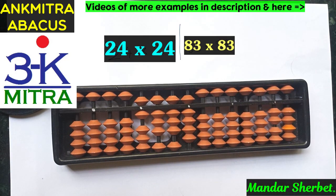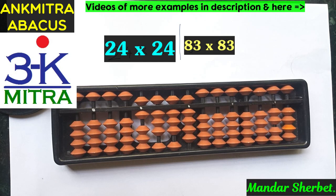With both these examples I hope that the two-digit multiplied by two-digit calculation method on the abacus will be better understood by everyone. I have created more examples and more videos of this method, and I will share the links in the description below. Please do have a look at those videos as well.